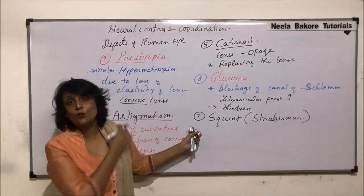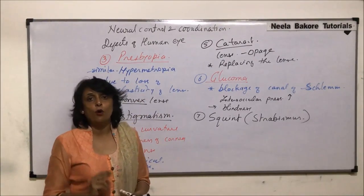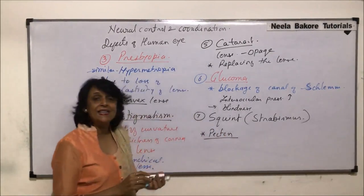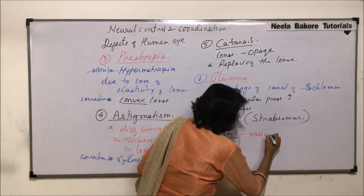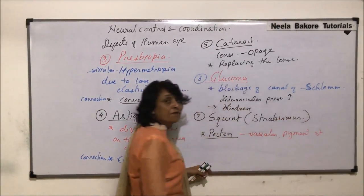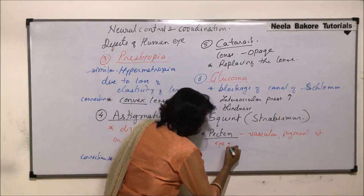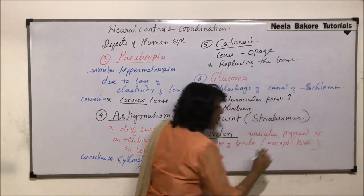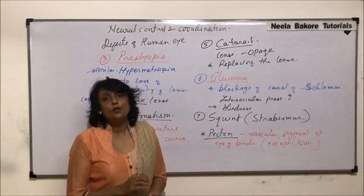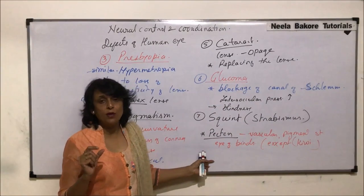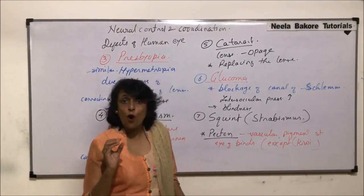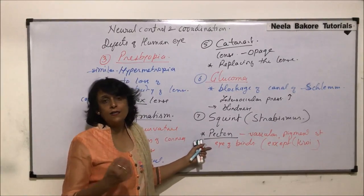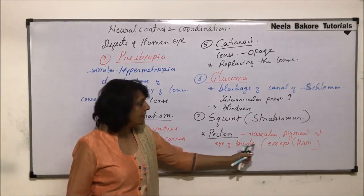Those are the disorders associated with the human eye. Two more important terms, though not associated with the human eye: one is pecten. Pecten is a vascular, pigmented structure found in the eye of birds, except kiwi. It is found in the vitreous chamber, extending from the optic nerve — that is, the blind spot — into the vitreous humor, and it is believed to help in the power of accommodation.